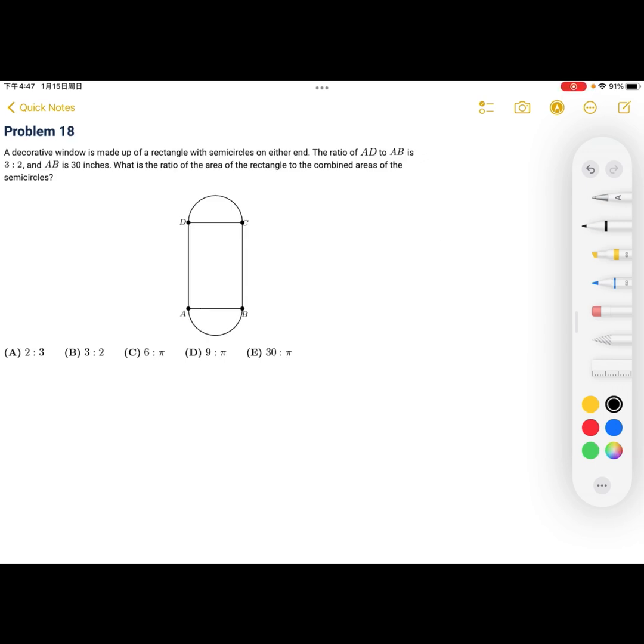Problem 18. A decorative window is made up of a rectangle with semicircles on either end. The ratio of AD to AB is 3 to 2. And AB is 30 inches. What is the ratio of the area of the rectangle to the combined areas of the semicircles? So, we're given that AD to AB is 3 to 2. And AB is 30.